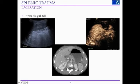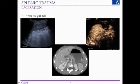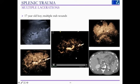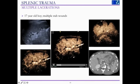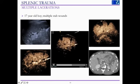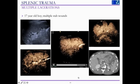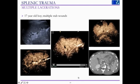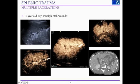Here are a couple of splenic examples. A little girl who had a fall: there is a heterogeneous area in the spleen which after contrast corresponds to the area of laceration, shown as a lack of enhancement — perfectly matching the CT. Another example is a teenager who came in with multiple stab wounds. On initial B-mode ultrasound we couldn't really see the lesions, but after injecting contrast, the lacerations can be seen really easily and clearly — again confirmed on the corresponding CT scan.